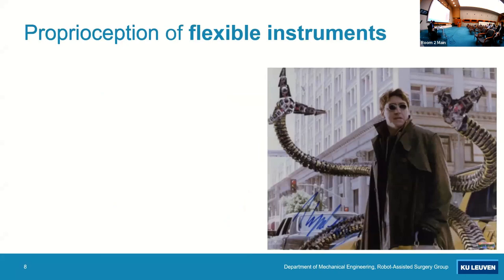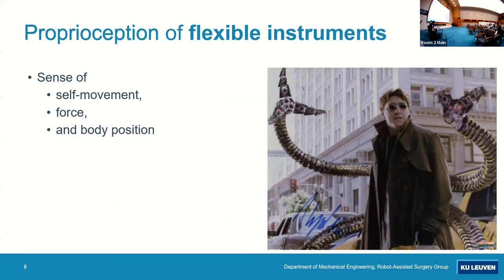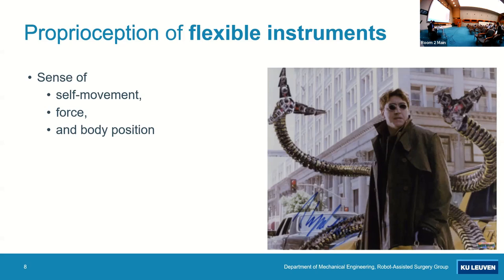For flexible instruments, it's even more critical because we're not used to understanding how a flexible instrument moves or how to control that. These parameters - self-movement, force, body posture - are very hard to get, and we need solutions. Since the structure is so complex, even a mechanical engineer like me starts doubting if model-based is still possible. How could learning help? We have a distributed system, so we need distributed sensing, but we also need intelligent processing.